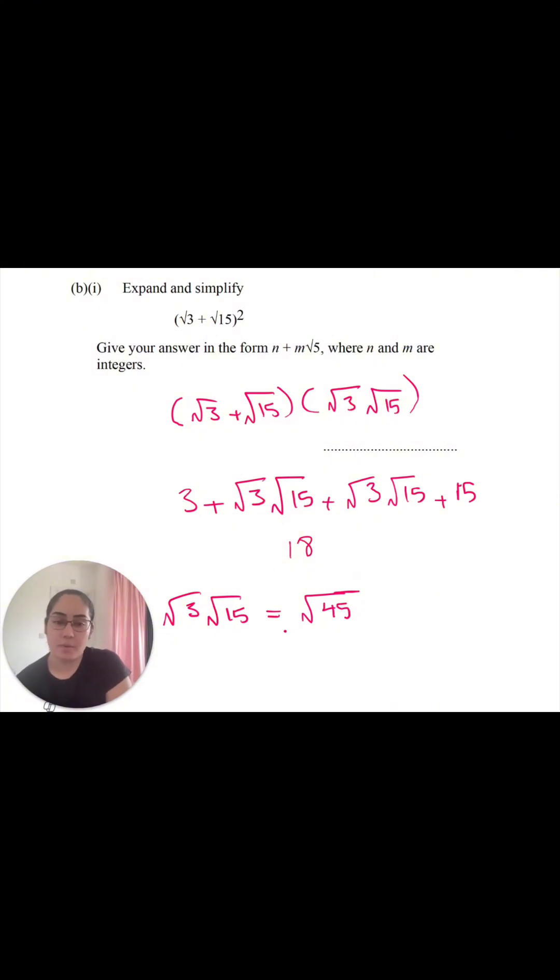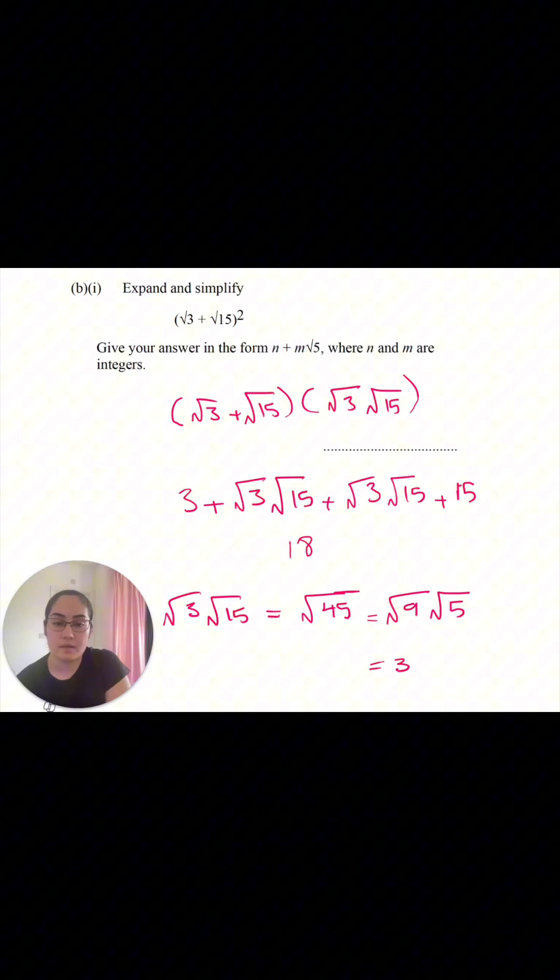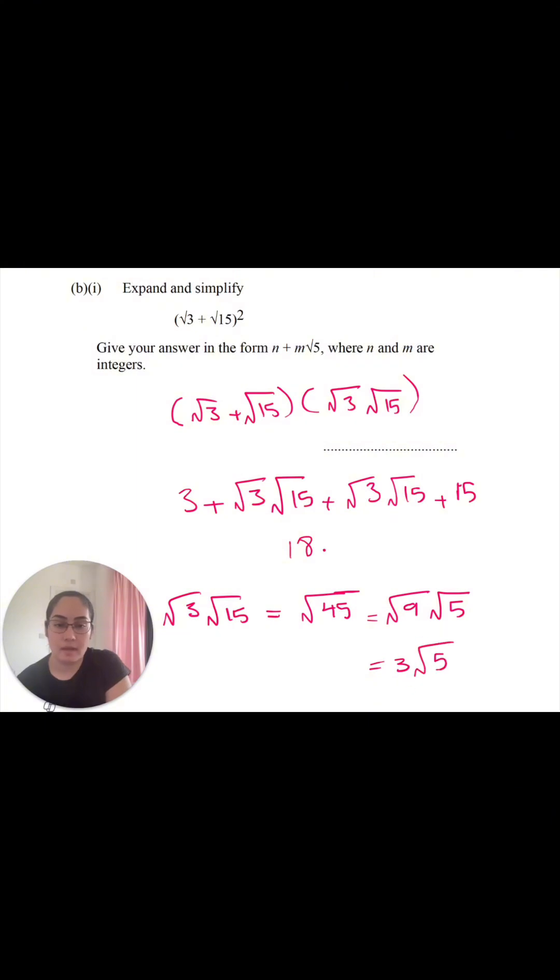So root 3 root 15, I cannot get rid of the square roots. I cannot simplify it in that sense. But when I look at root 45, root 45 is also equivalent to root 9 root 5. Square root of 9 is equal to 3, so that becomes 3 root 5. That's going to be equal to 3 root 5 plus 3 root 5.